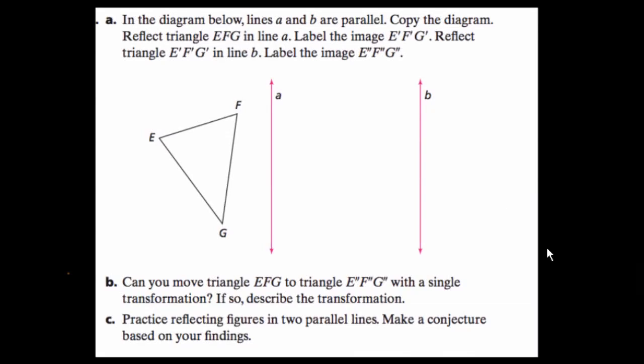Okay, so we're told that in the diagram below, lines A and B are parallel, so these two lines. And we want to reflect triangle E, F, G, that's this triangle right here, in line A, and label the image as E prime, F prime, G prime.